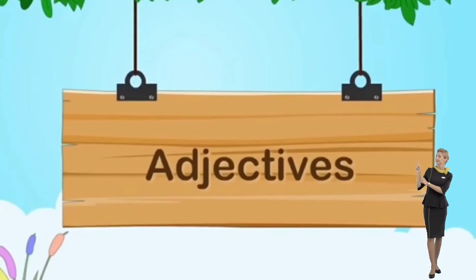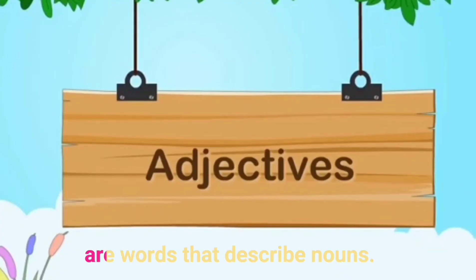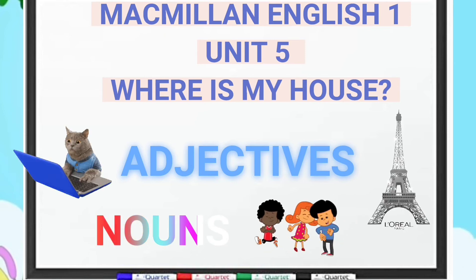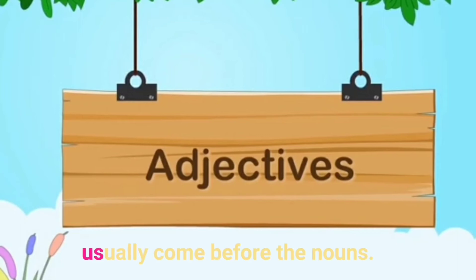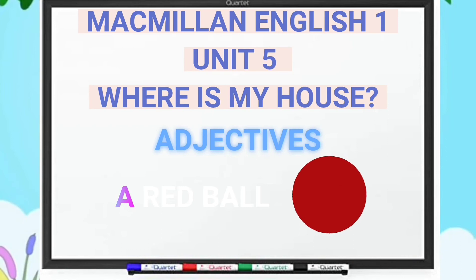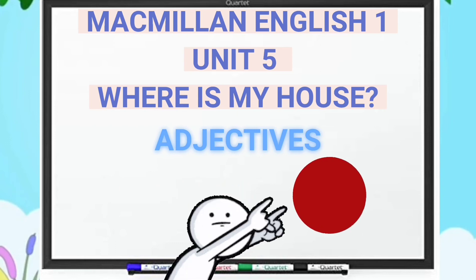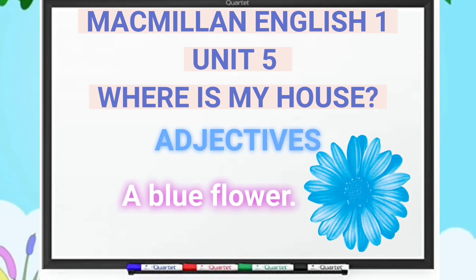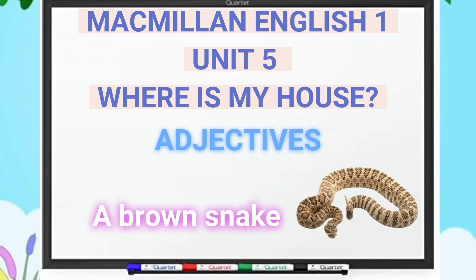Let's talk about adjectives. Adjectives are words that describe nouns. Nouns are words for people, places, or things. Adjectives usually come before the nouns they describe. For example: a red ball — red gives information about the ball. A blue flower — blue describes the flower. A brown snake — brown describes the specific snake.